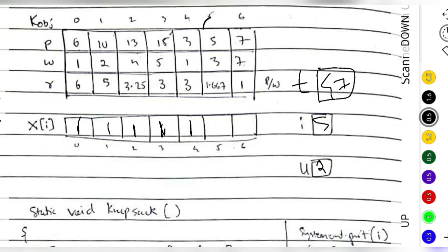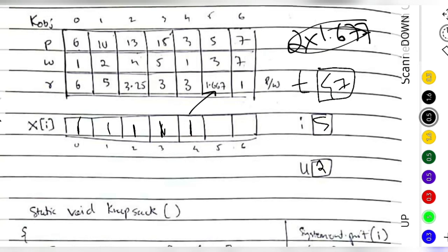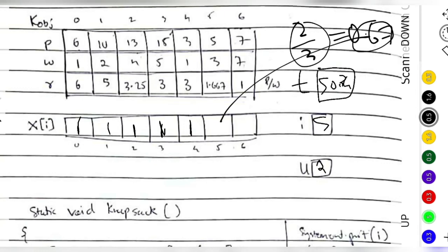i becomes 5. The object has weight 3. Is 3 greater than 2? Yes — we cannot include the whole object. We only need 2 kilograms of this 3-kilogram object. So we include just 2 kilograms. The profit for 1 kilogram is 1.67, so for 2 kilograms it's 2 times 1.67, which is 3.34. Total profit becomes 47 plus 3.34. The fraction included is 2/3, which is 0.67, stored in x[5].